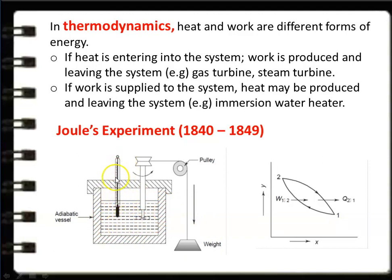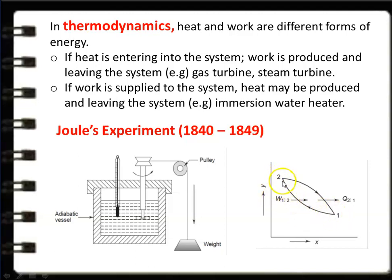After the work input, we stop lowering the weight, remove the vessel, and allow the system to cool down by removing heat energy — and the system returns to its original state. So from state 1 to 2, work is given by stirring (lowering the weight), raising the system to point 2. When heat energy is removed, the system returns to the original state. This is a thermodynamic cycle: process 1 has work input; process 2 has heat removal — a two-process thermodynamic cycle.